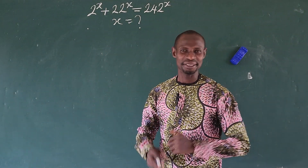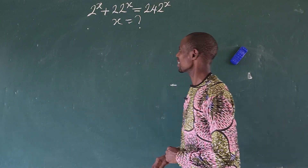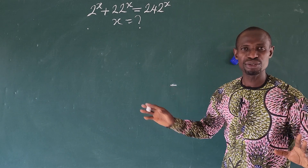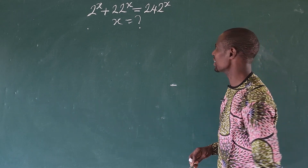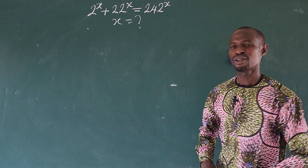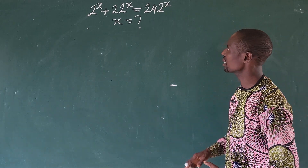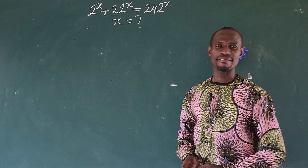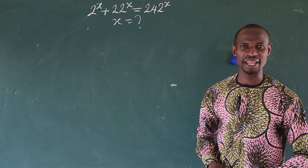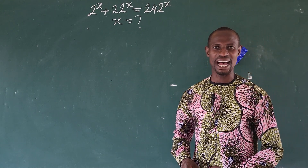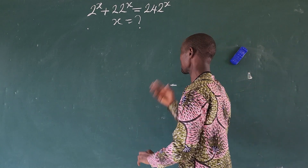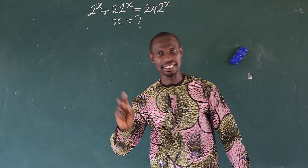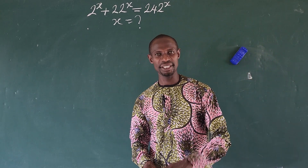Hello, great minds, welcome to today's math class. Look at this challenge before us: the question is 2 to the power of x plus 22 to the power of x equals 242 to the power of x. What is the value of x that satisfies this challenge?